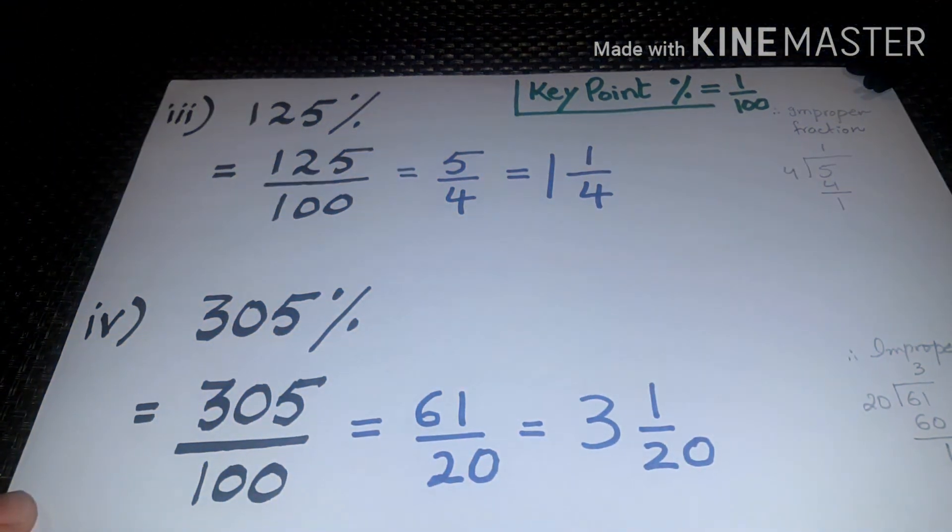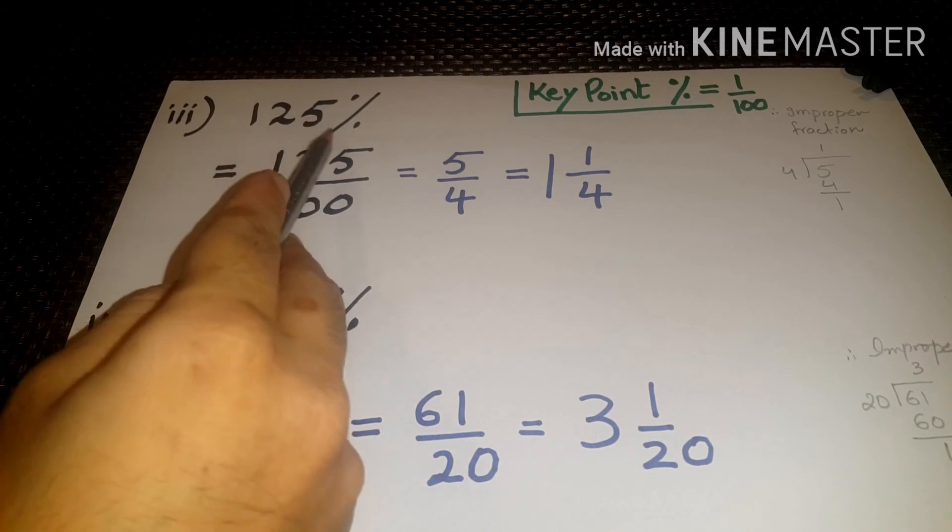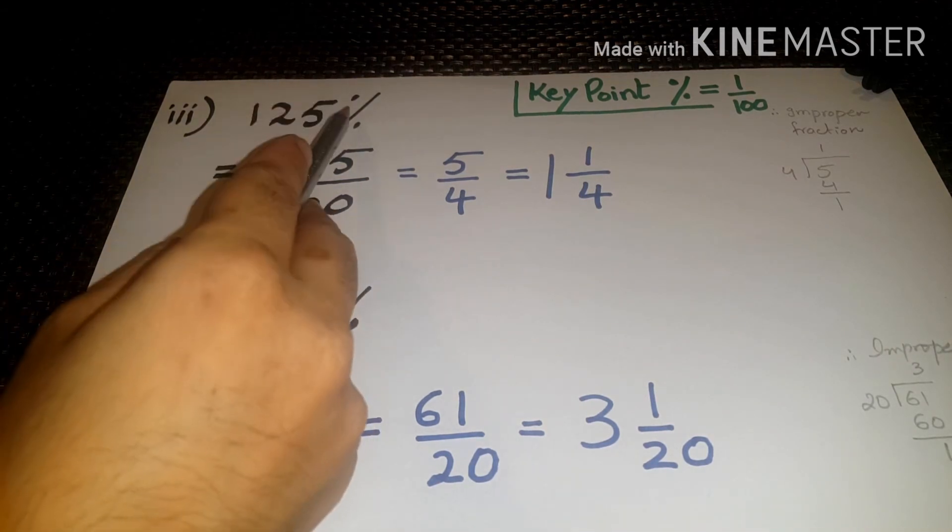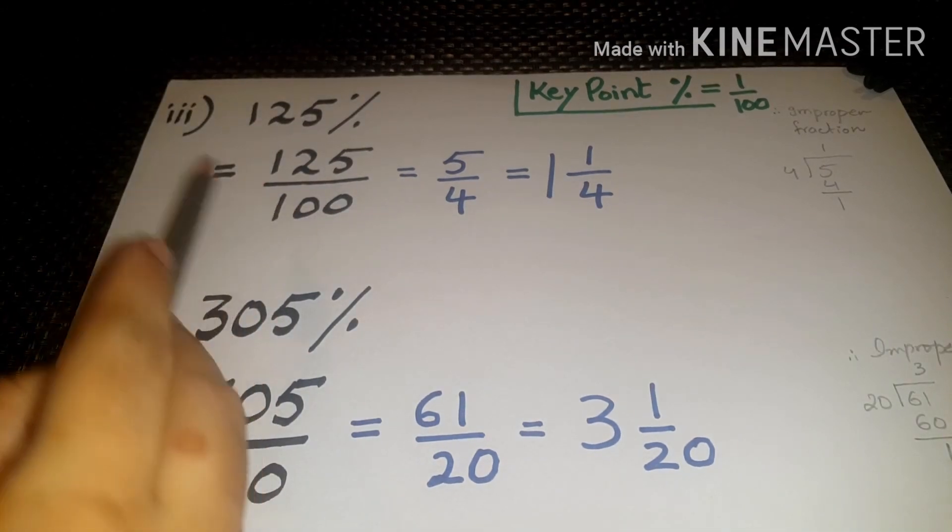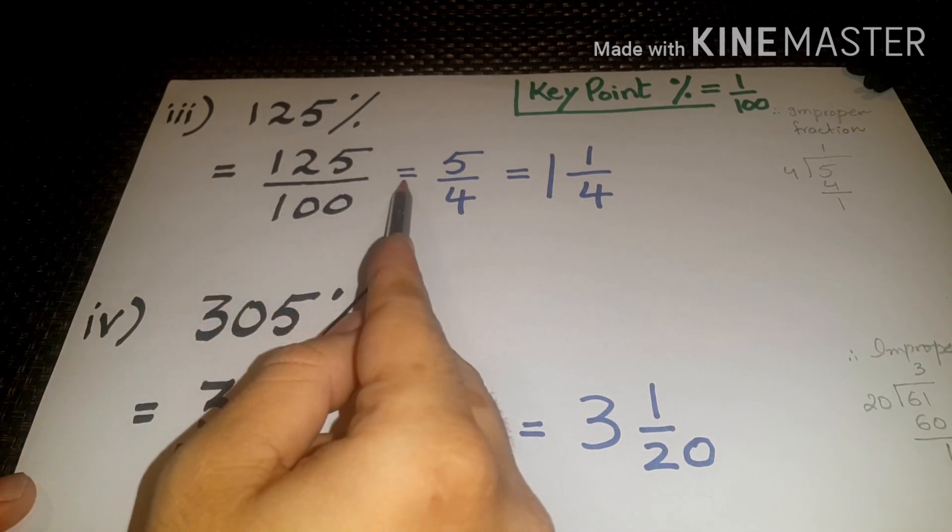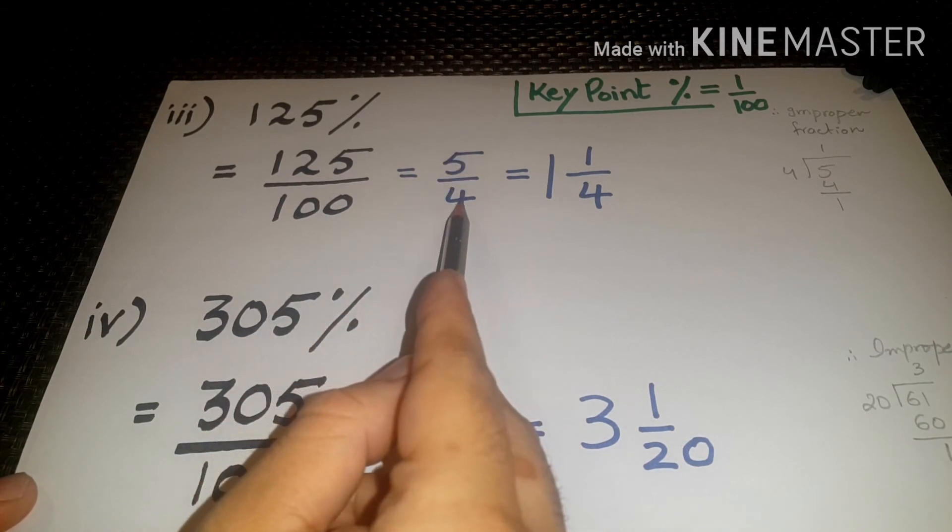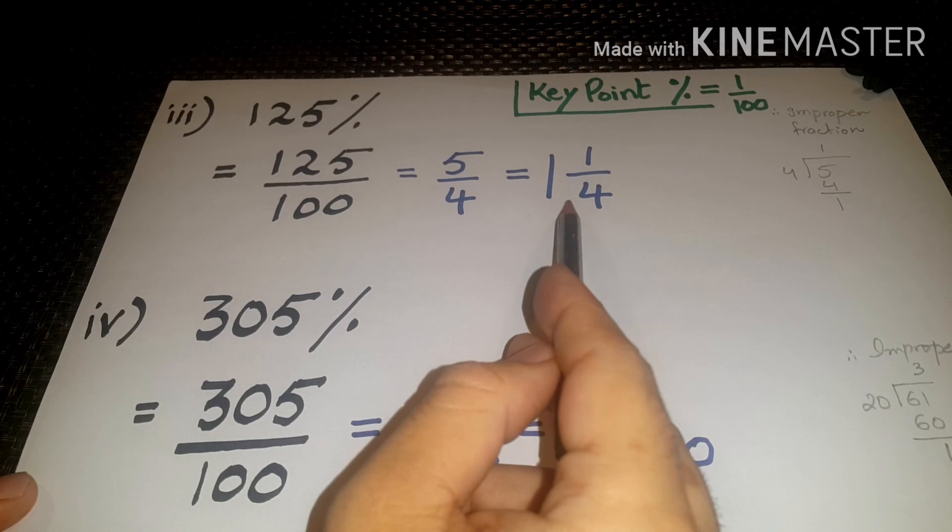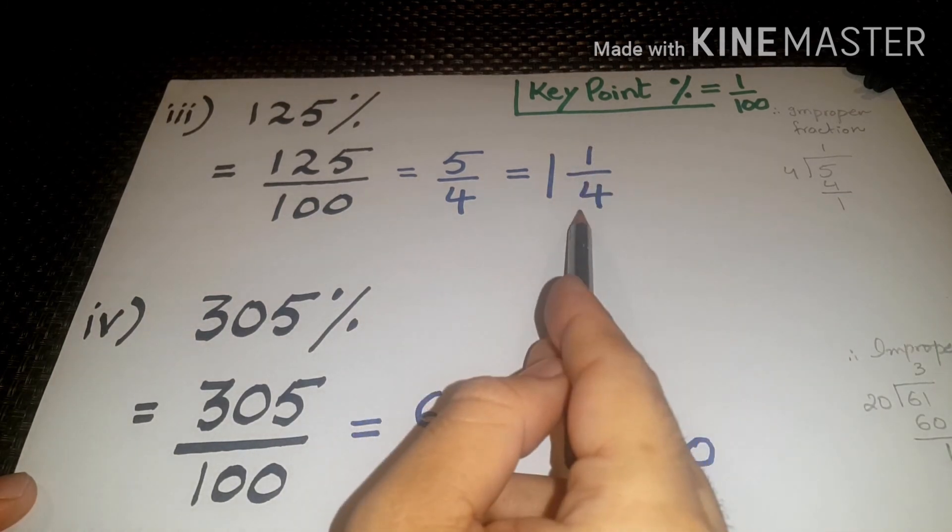Now let's take some bigger number. Question number three, 125 percentage. Now here the key point is that this percentage sign means divided by hundred. So 125 divided by hundred, after solving it we get 5 by 4. Now 5 by 4 is an improper fraction. So by doing some calculations we get 1 whole number 1 by 4.